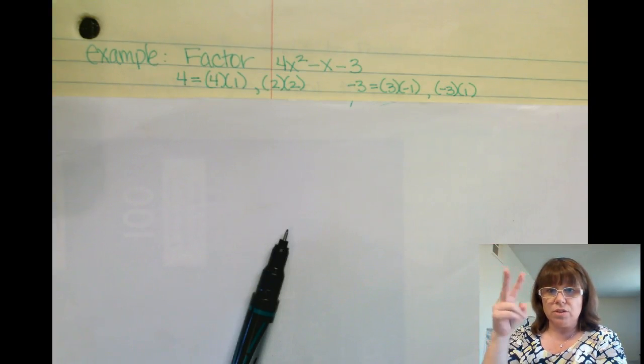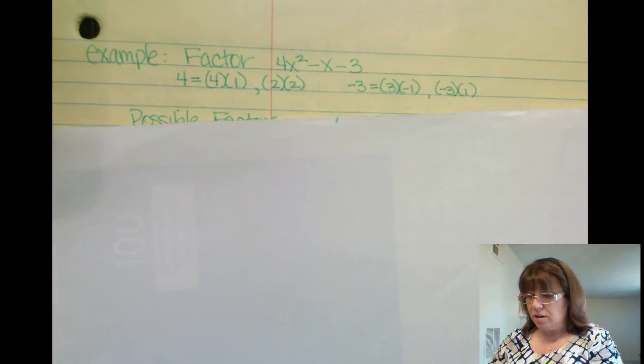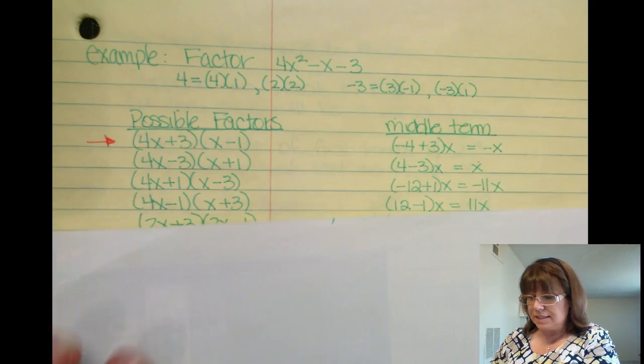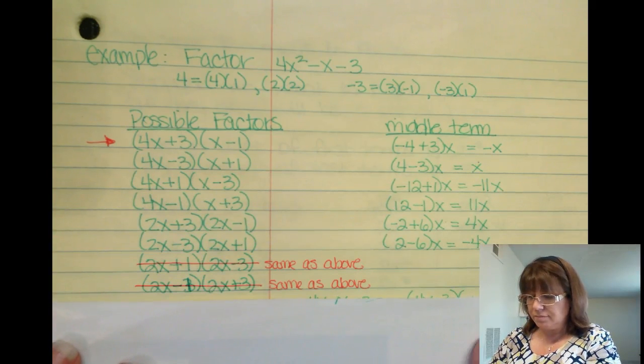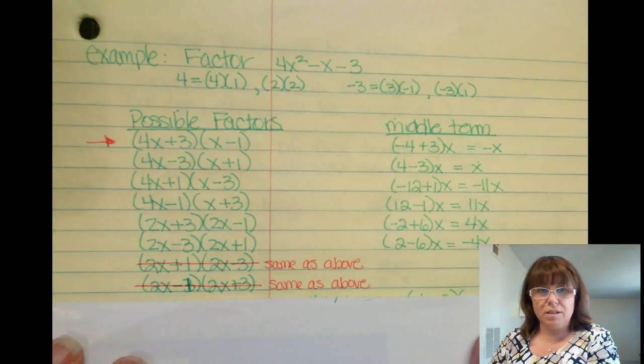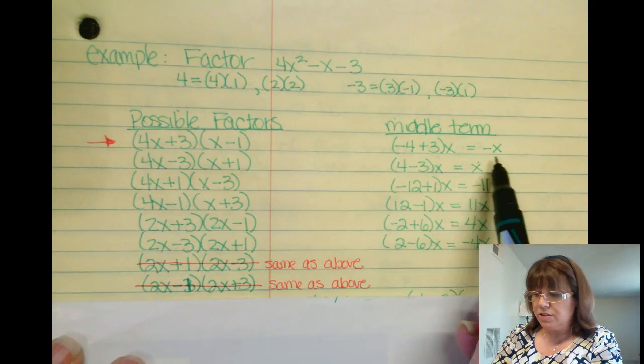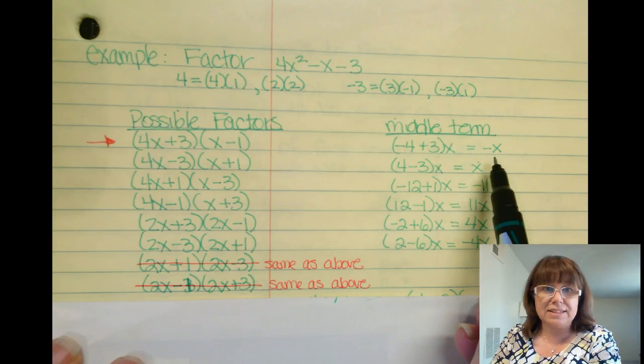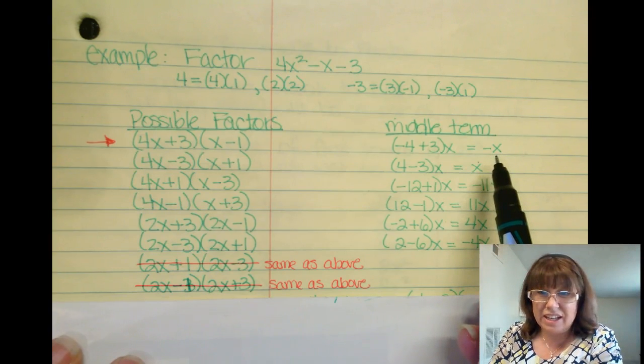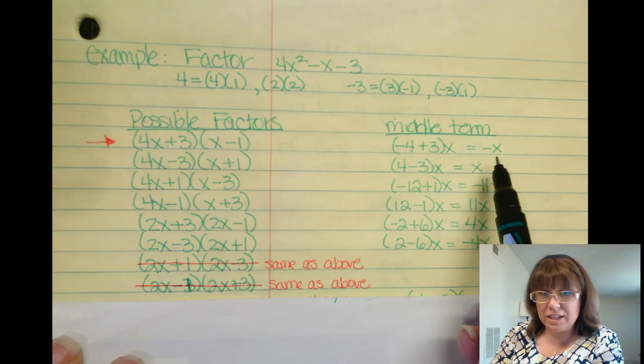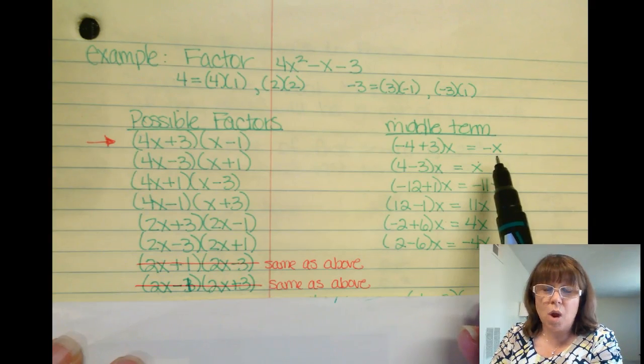And remember, order matters when we're dealing with negative numbers. So here are some of the possibilities. I have 4x plus 3 times x minus 1. My middle term is negative x. Now I got really lucky there, and it was the very first one that I tried was the actual problem.